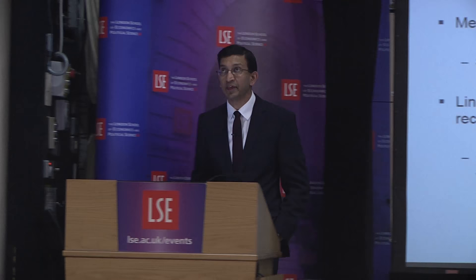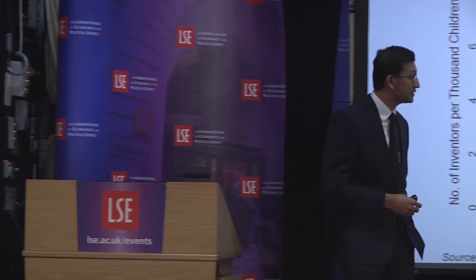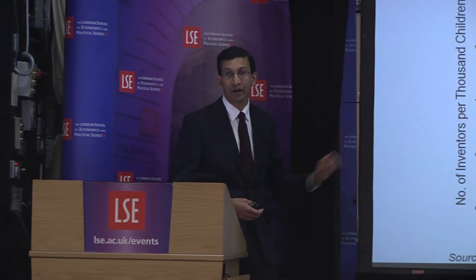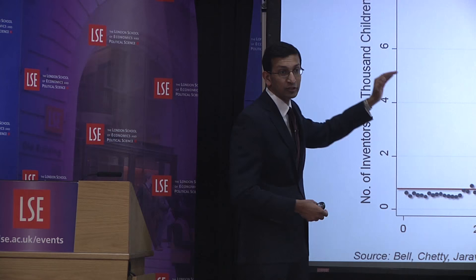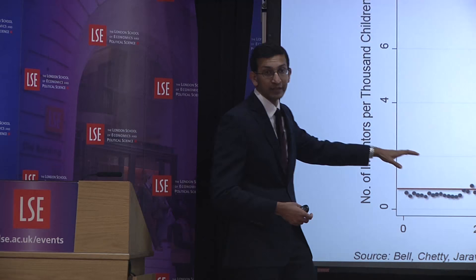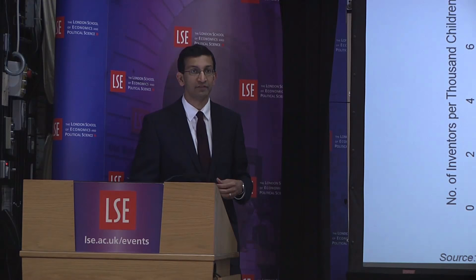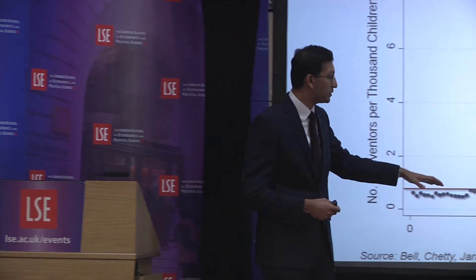Starting by thinking about conditions at birth: this chart shows patent rates versus parent income. On the x-axis we have the parent's household income percentile — 100 dots, one for each percentile — and we're plotting the number of kids who go on to become inventors by their mid-30s versus their parent's income. There's an incredibly strong relationship: if you're born to parents in the top 1%, you're about 10 times as likely to have a patent as if born to parents below the median.